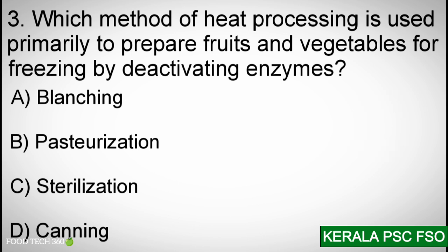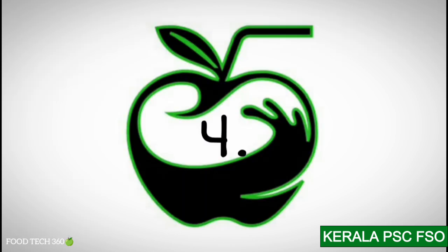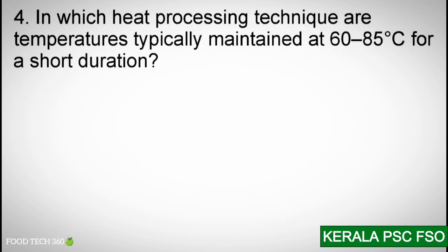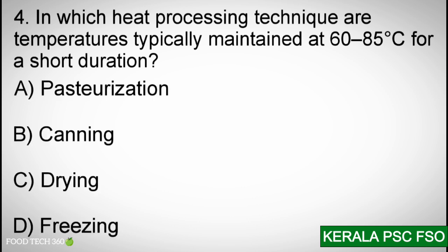Correct answer: A — Blanching. Q4: In which heat processing technique are temperatures typically maintained at 60 to 85°C for a short duration? Options: A) Pasteurization, B) Canning, C) Drying, D) Freezing.